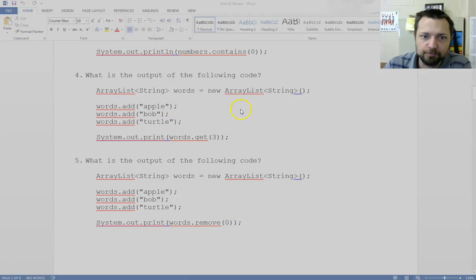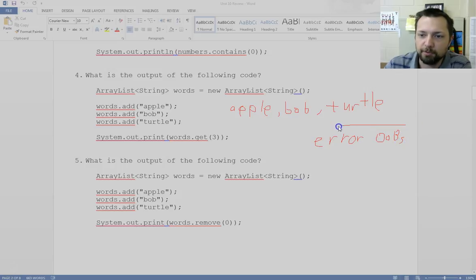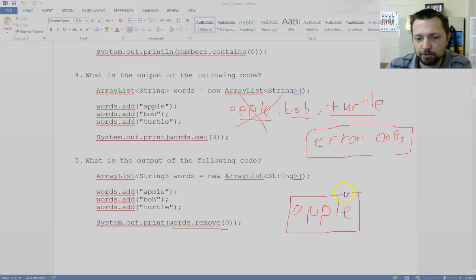This one's going to take a little longer because I've got to write words. So I add apple, I add bob, I add turtle. And then I access the word at position 3. That would be an error out of bounds. Out of bounds. Takes a while to write with the mouse, so I'm going to write OBS, out of bounds error. 0, 1, 2. There's no spot 3. And again, our list is going to be apple, bob, turtle, and the next example. They're added in the same order. If I were to remove the thing at position 0, that would be apple. And when you call remove, it tells you who it removed. So the list would now be bob, turtle, and apple would appear and get printed because that's what was at position 0.